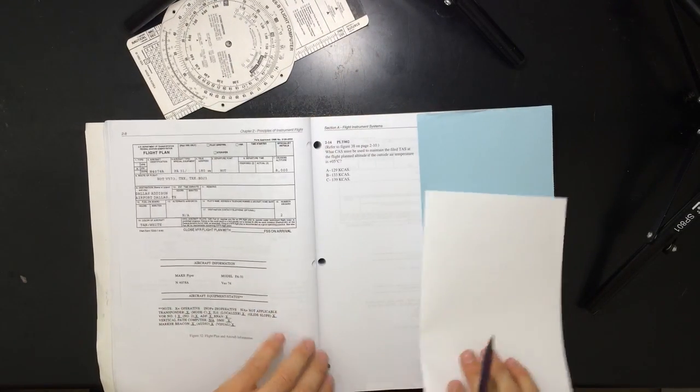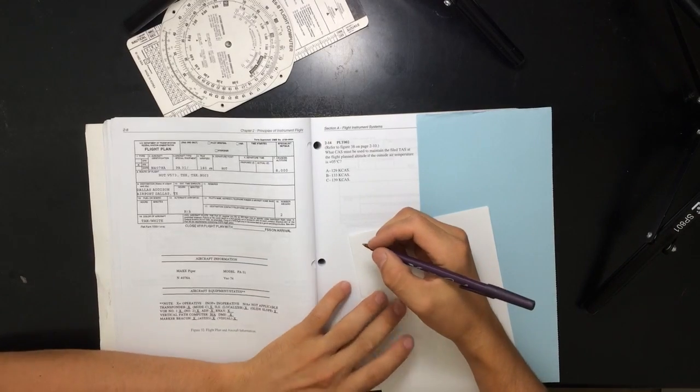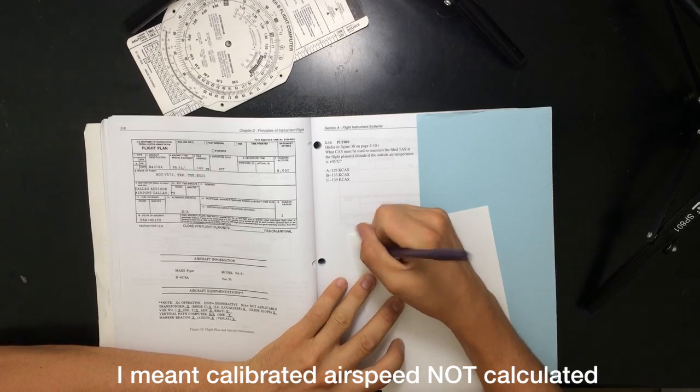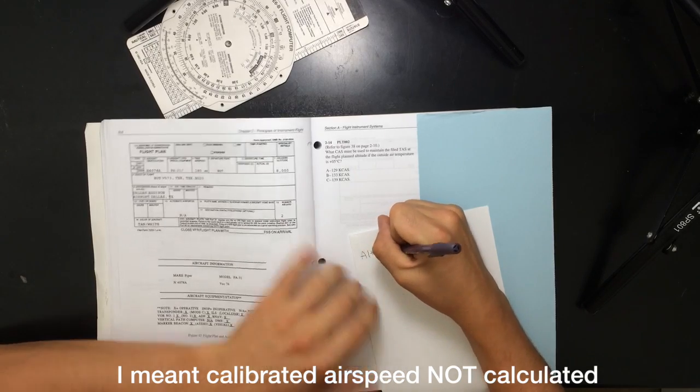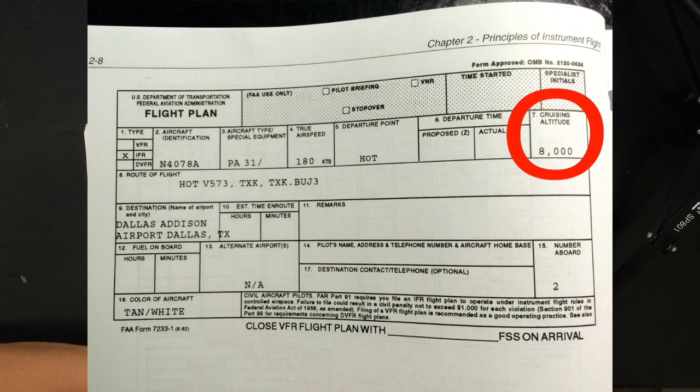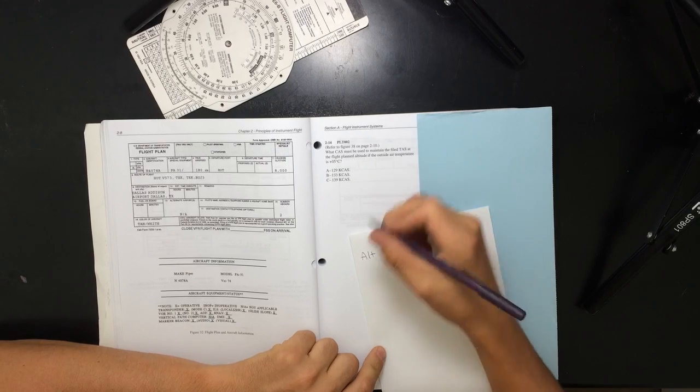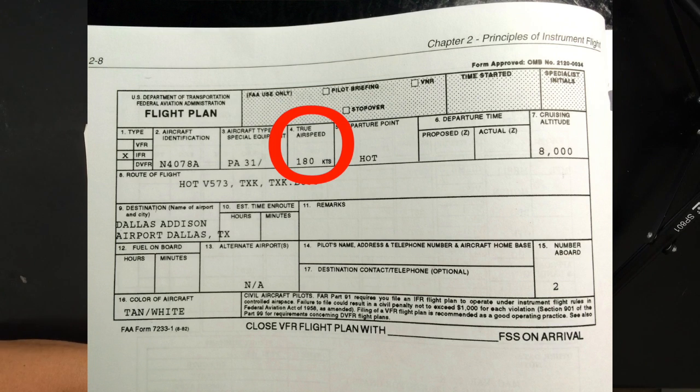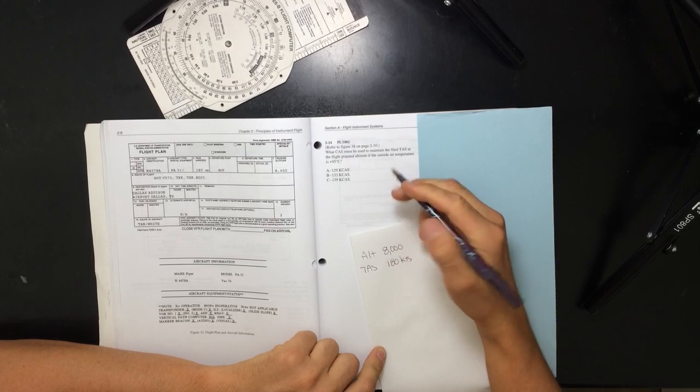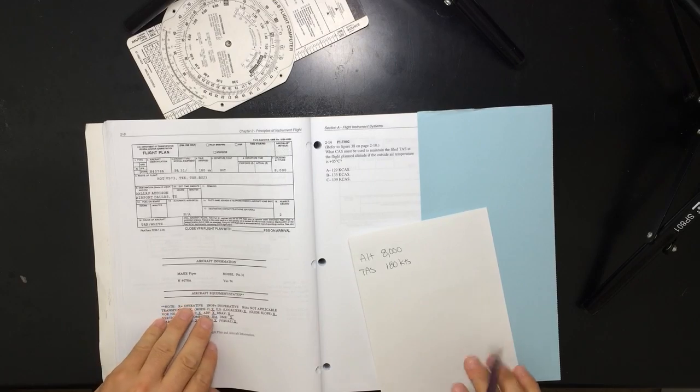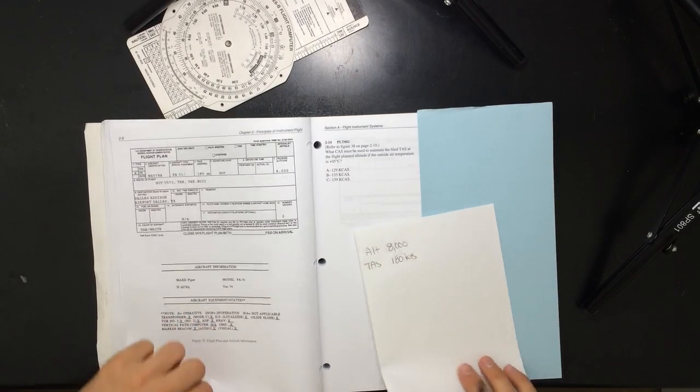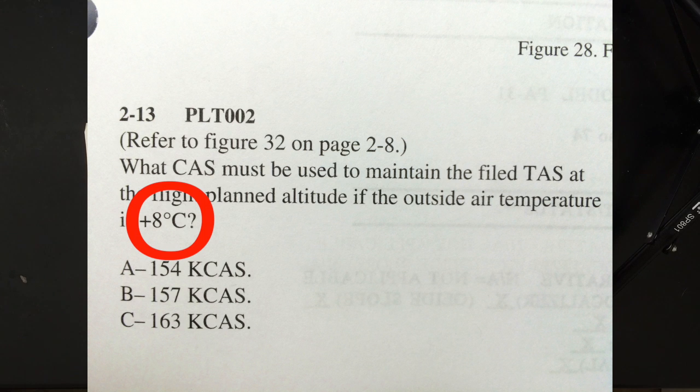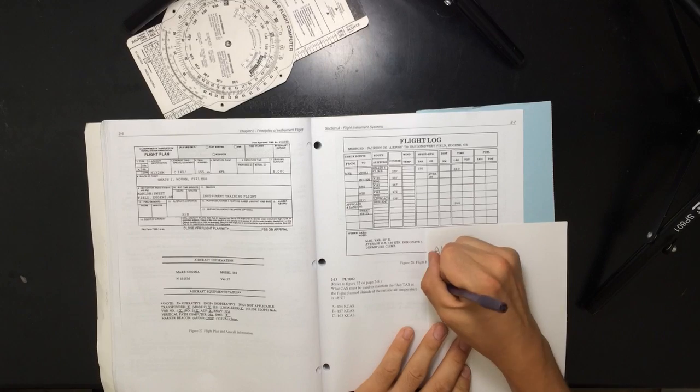So you got to have three things to be able to calculate calibrated airspeed. The three things you have to have is your cruising altitude. So if we go over here to 28, our cruising altitude is 8,000 feet. We're also going to need our true airspeed, which is 180 knots. And then we'll need the temperature, which they gave to us on the other page here, which was plus 8 degrees Celsius.